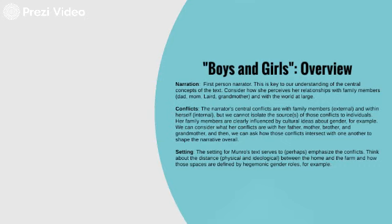Narration, central conflicts, and setting. The narration is really important because it's first person narration — we're in our narrator's head: how she sees the world, how she understands that relationship, and how she understands and articulates those conflicts. That's going to tell us a lot about not only the conflicts, but also the larger issues at stake in the text. Those conflicts are primarily external conflicts with family members — her mom, her dad, her brother, and her grandmother, although the grandmother is mentioned only a little bit.